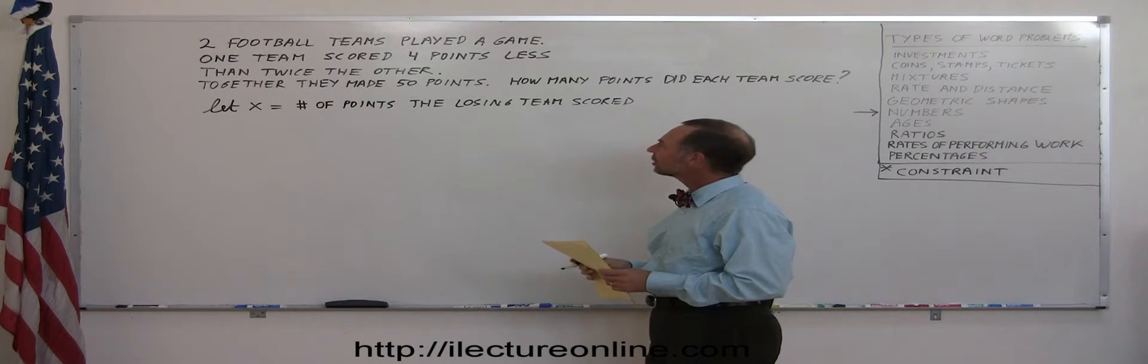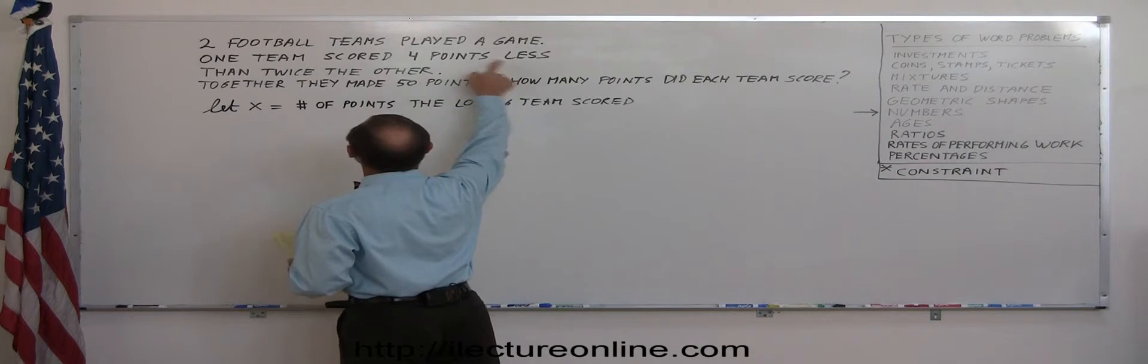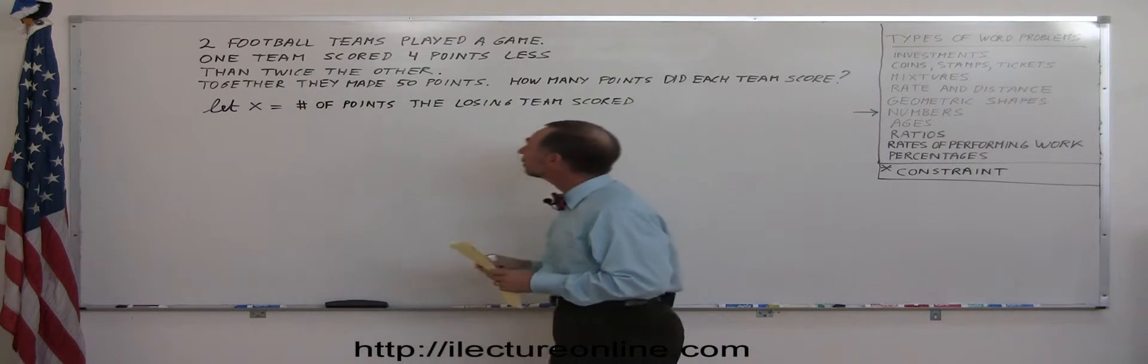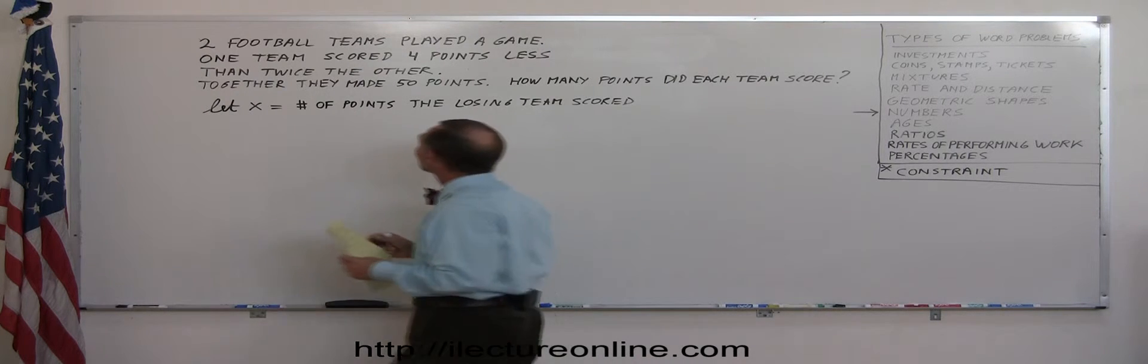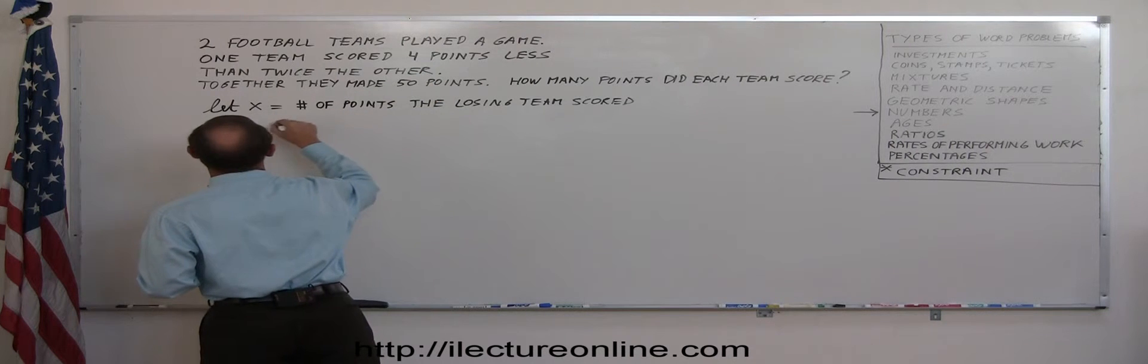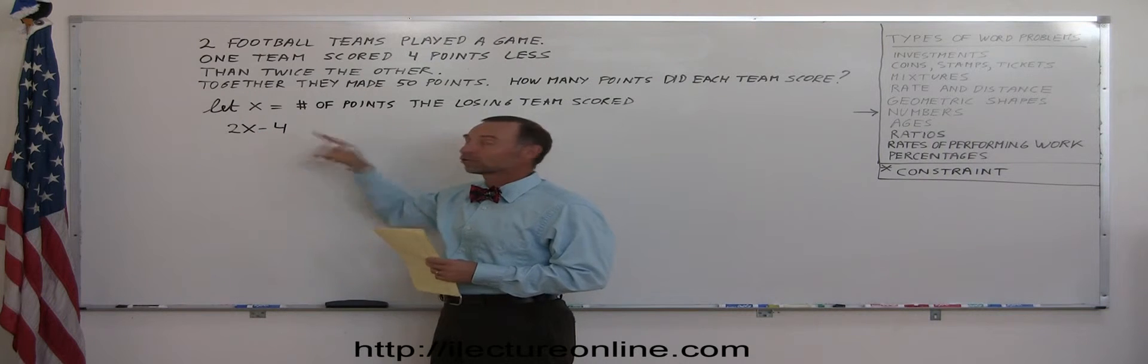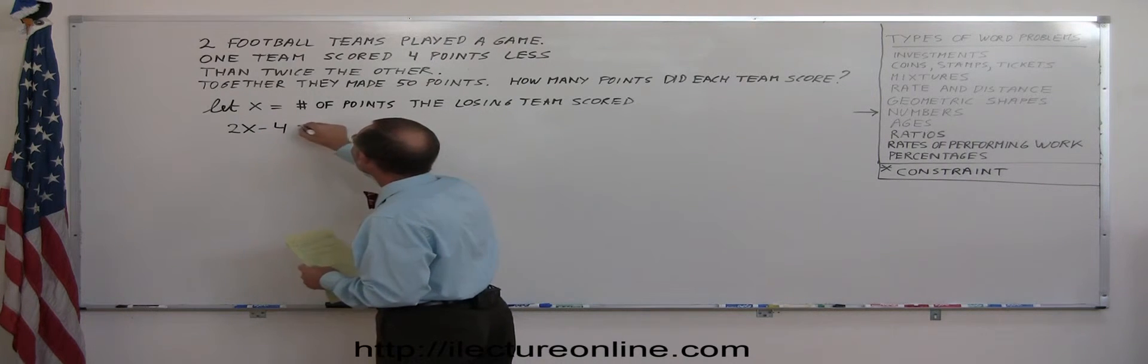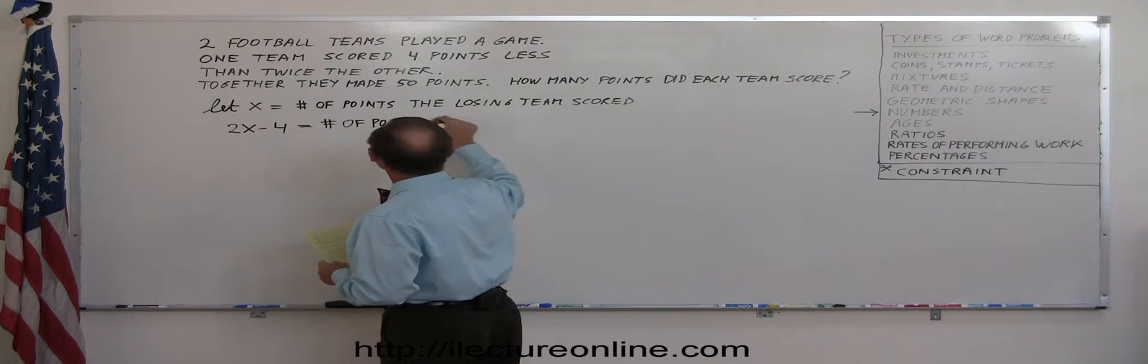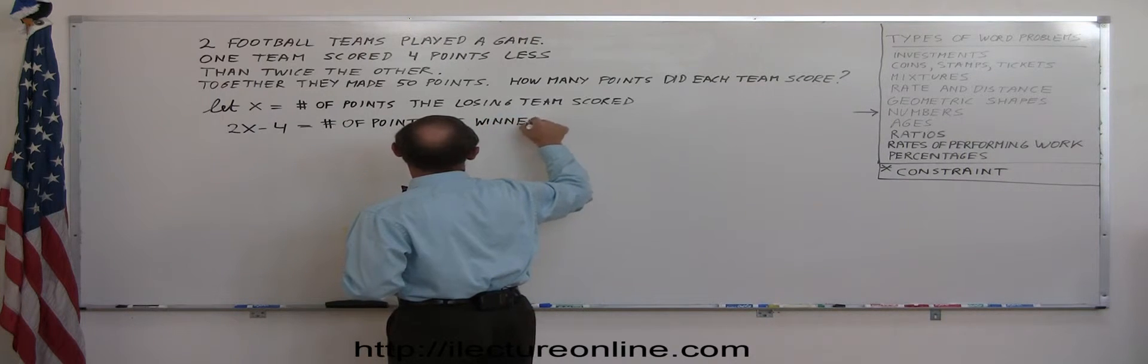So if X was equal to the number of points of the losing team, then how many points did the winning team score? And here they tell us, one team scored four points less than twice the other team. I'm assuming that's the winning team. Even if you're wrong, it'll still come out right. So twice this would be 2x, and then four less would be minus 4. So this is twice the number that the losing team scored minus 4 points. That's 4 less than twice the number, and so that equals the number of points the winner scored.